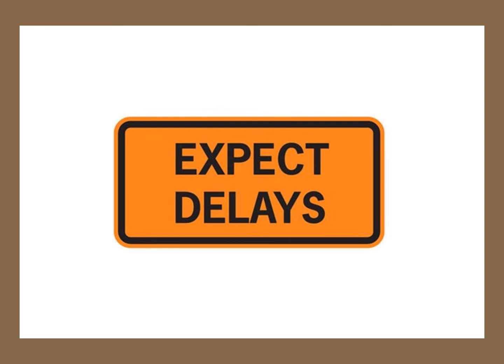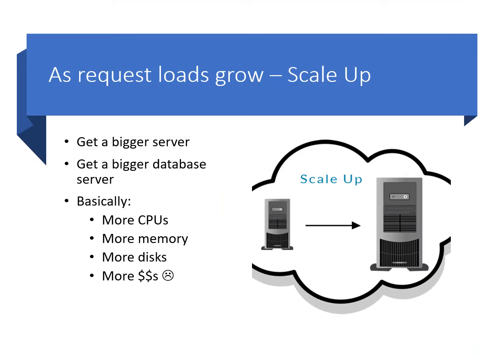But if request loads keep growing, latencies will increase as the service has insufficient CPU and memory capacity for the concurrent request volume, and hence requests just start to take longer. In these circumstances, our single server becomes overloaded — it's a bottleneck. In this case, the first strategy for scaling is usually to scale up the application service hardware, also known as vertical scaling.